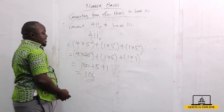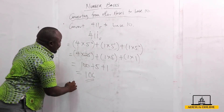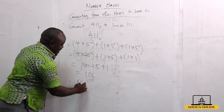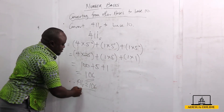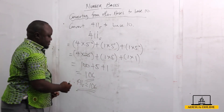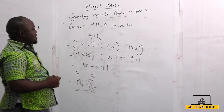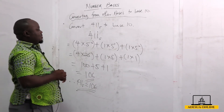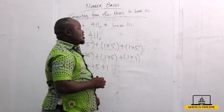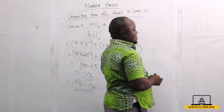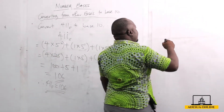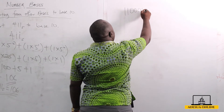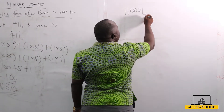Therefore, we can say 411 in base 5 is equal to 106 in base 10. This is how we convert from other bases to base 10. Now, assuming I want to convert 110001 in base 2 to base 10.